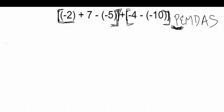We need to follow order of operations inside these square brackets. Looking at our first set of square brackets on the left-hand side, I have a negative 2 plus a 7 minus a negative 5. That's all addition and subtraction, so we go in order from left to right. Starting with negative 2 plus 7 — adding with different signs, we subtract: 7 minus 2 is 5, and we keep the sign of the bigger number, so that's a positive 5.